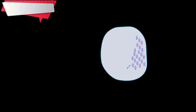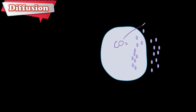After a chemical reaction takes place, we have a high concentration of carbon dioxide inside the cell but not much outside. So these CO2 particles are going to diffuse out of the cell, because the concentration inside the cell is higher than outside. The particles simply diffuse out.